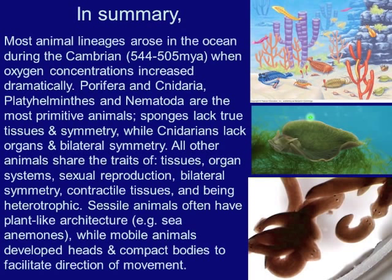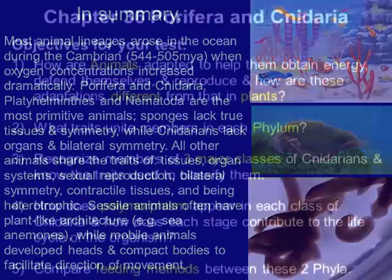On a 12-12 day-night cycle, this sea slug can actually go a year without eating, though there are some nutrients it will still need, so it can munch on algae or rocks to get those. Sessile animals often have plant-like architecture, for example sea anemones, while mobile animals developed heads and compact bodies to facilitate direction of movement.